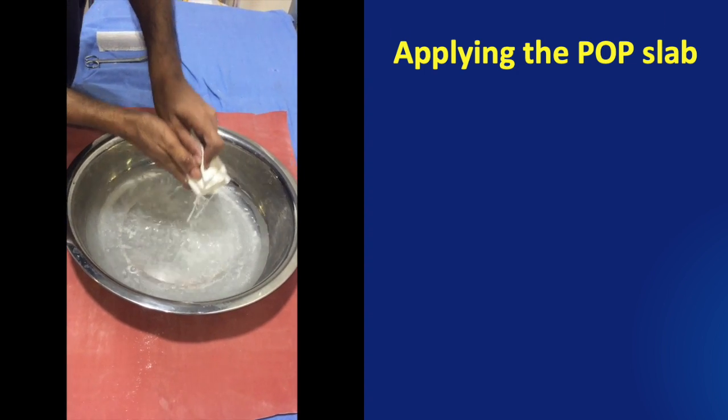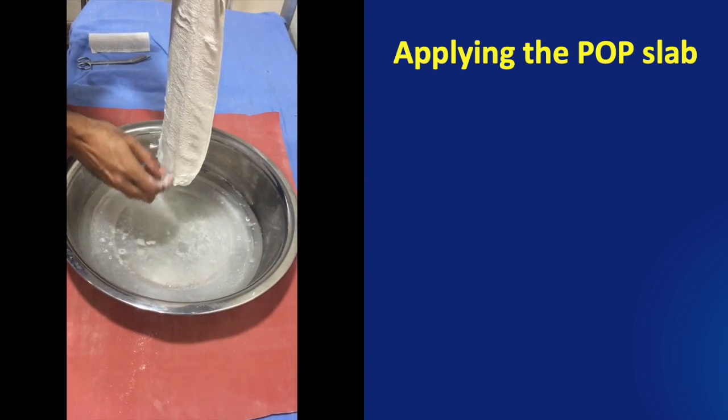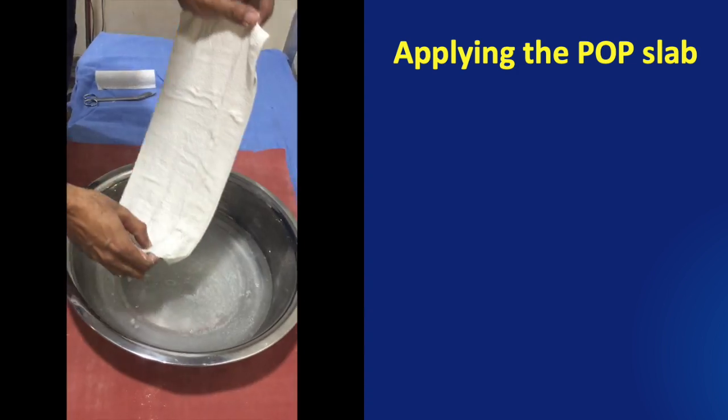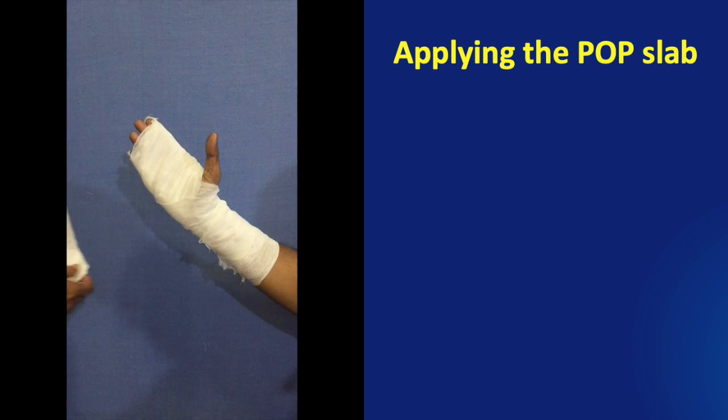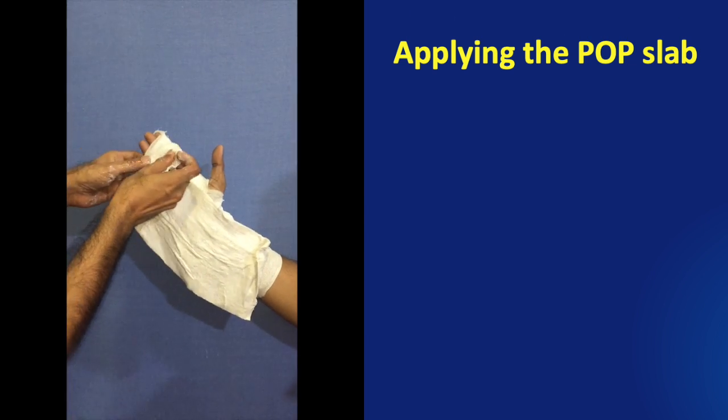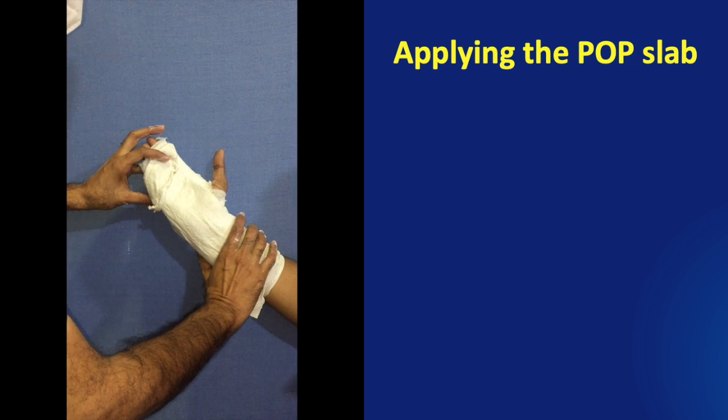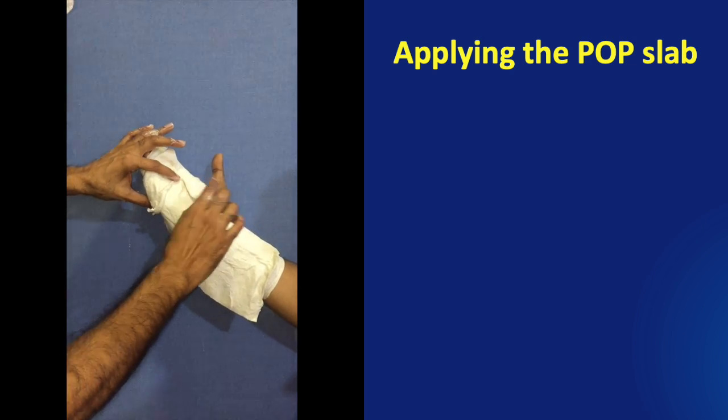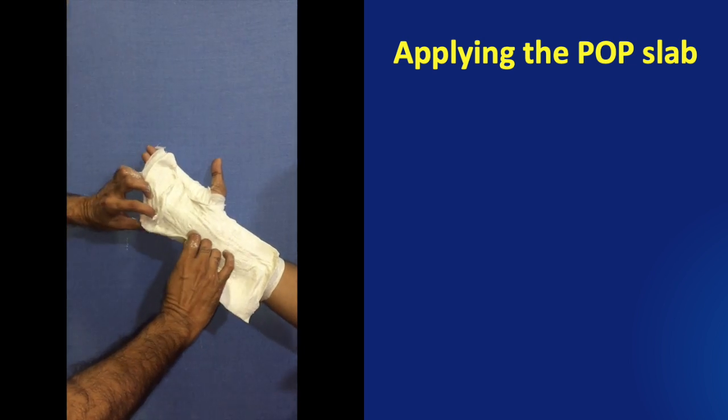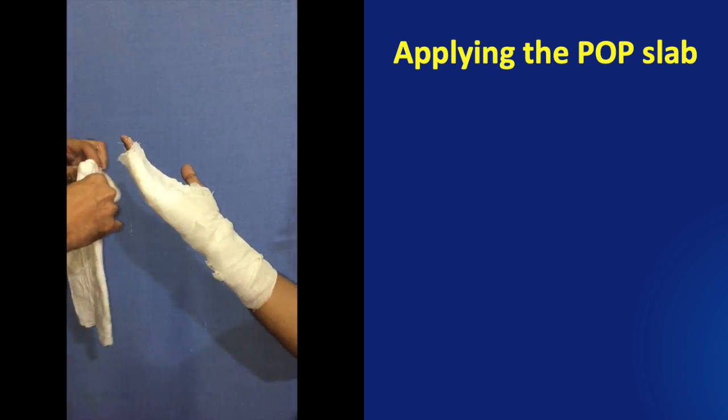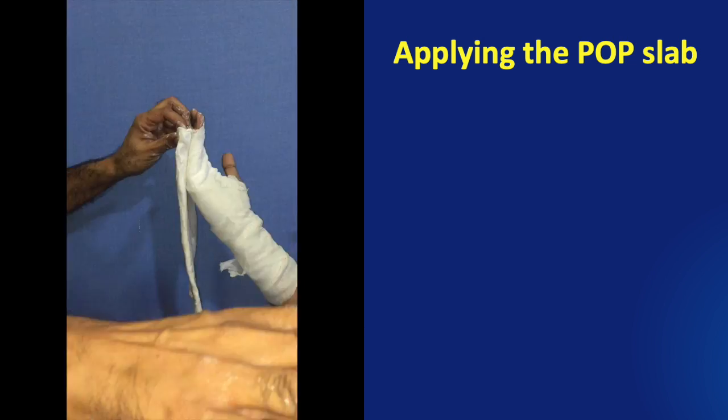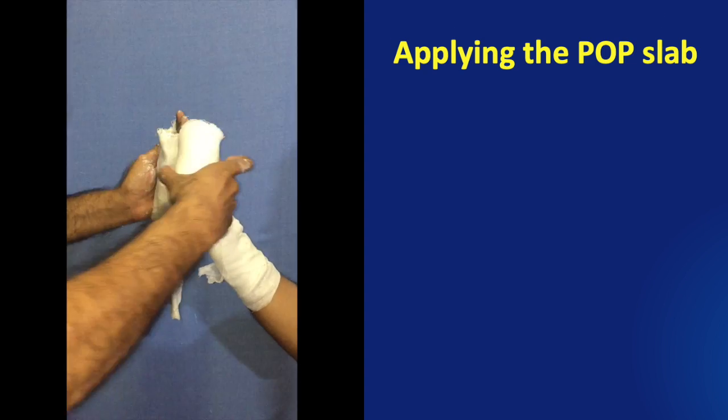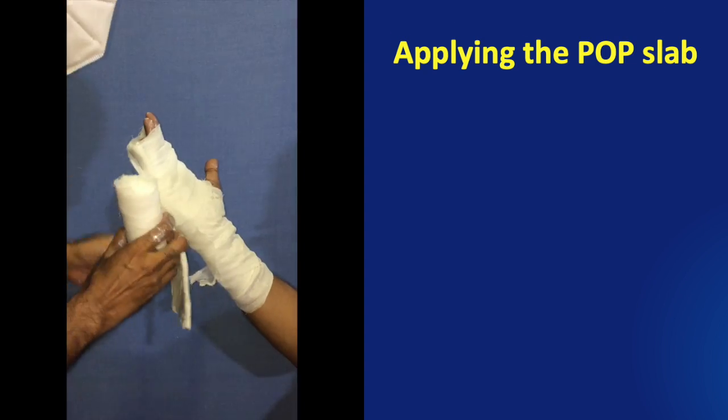Now remove the POP from the water. Gently drain off the excess water and apply over the soft pad or dressings on the hand. If on the volar side we should allow some movements of the thumb. So we need to make the palmar area of the POP slab a little narrower. If the POP is being applied on the dorsal side we make sure that the wrist is kept in neutral position.